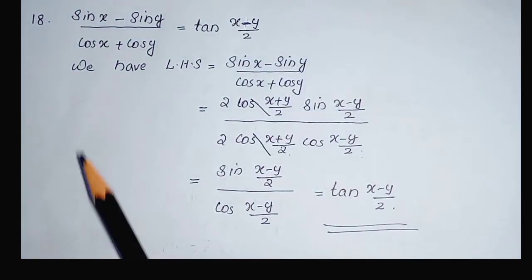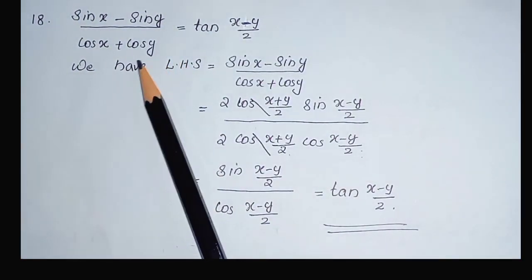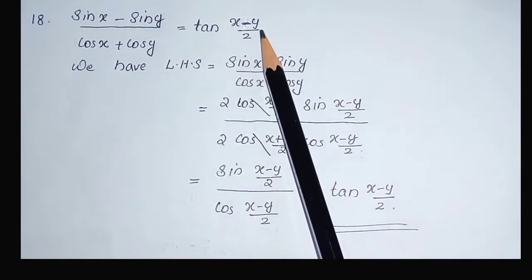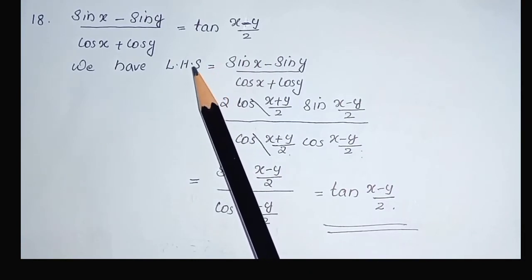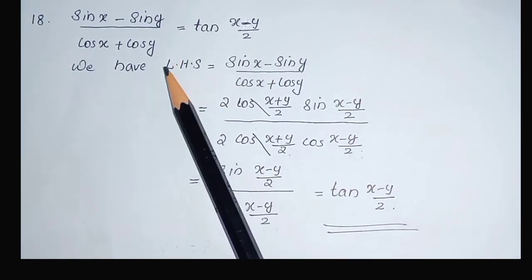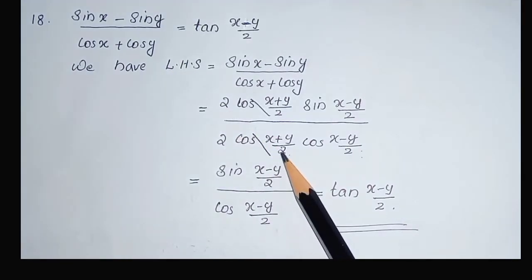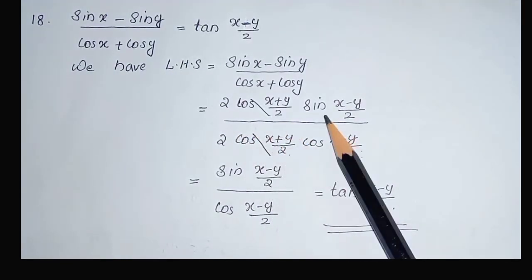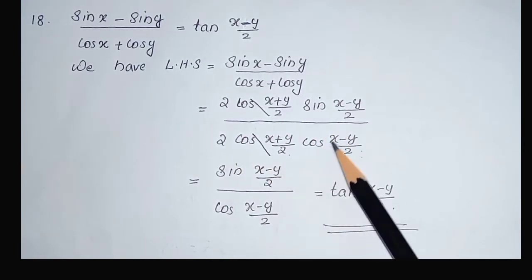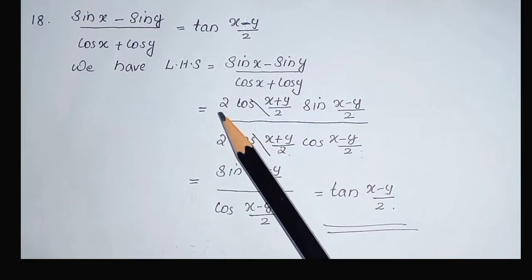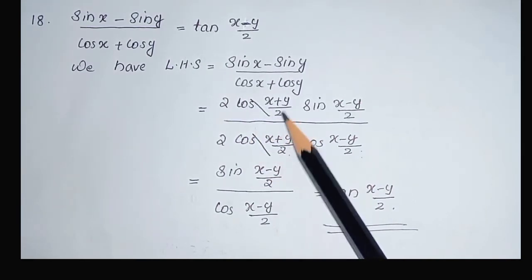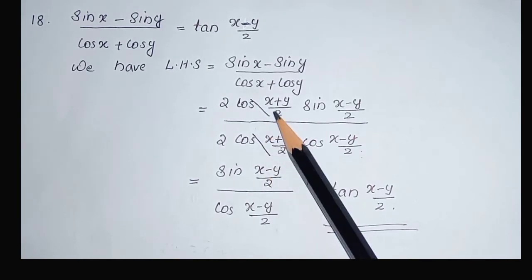Next question: sin x minus sin y divided by cos x plus cos y equal to tan((x-y)/2). This is a direct question. We know the identity sin x minus sin y and cos x plus cos y. Using this identity, we can write 2 cos((x+y)/2) sin((x-y)/2) in the numerator and 2 cos((x+y)/2) cos((x-y)/2) in the denominator. Here, 2 cos((x+y)/2) is common to both numerator and denominator.